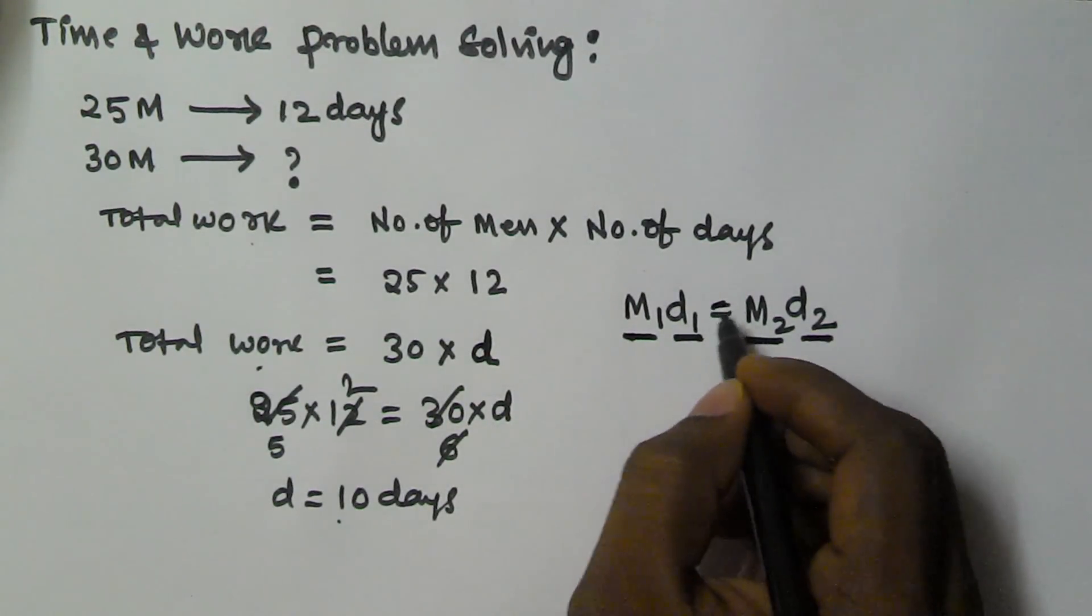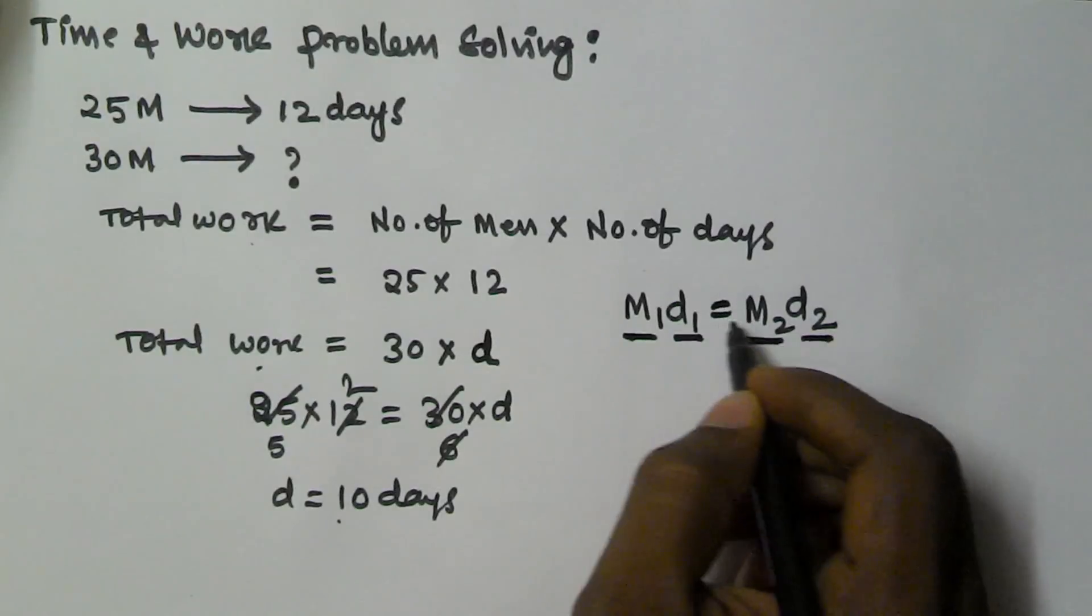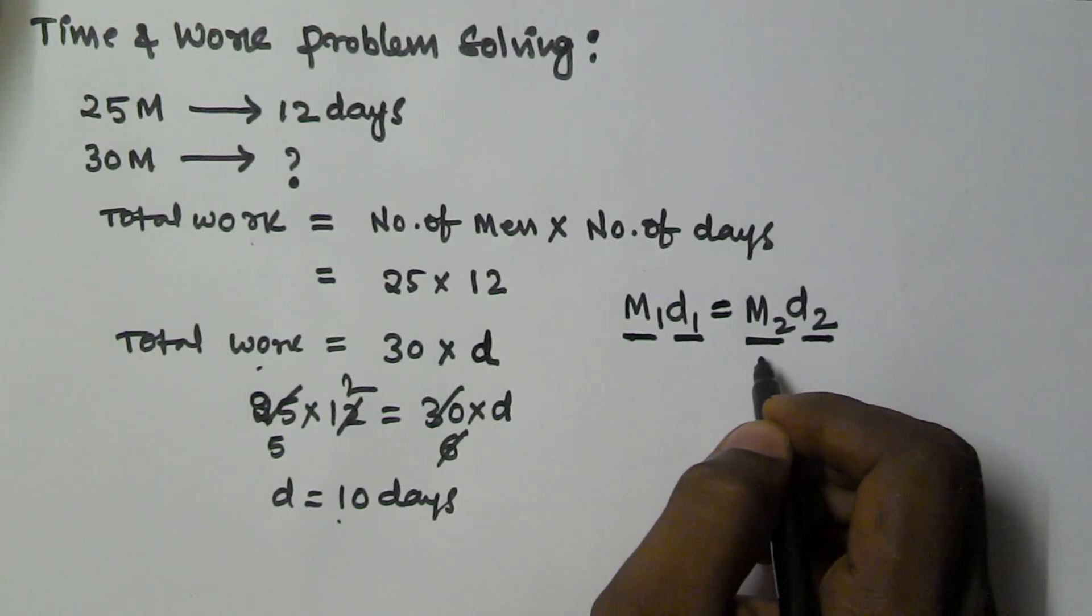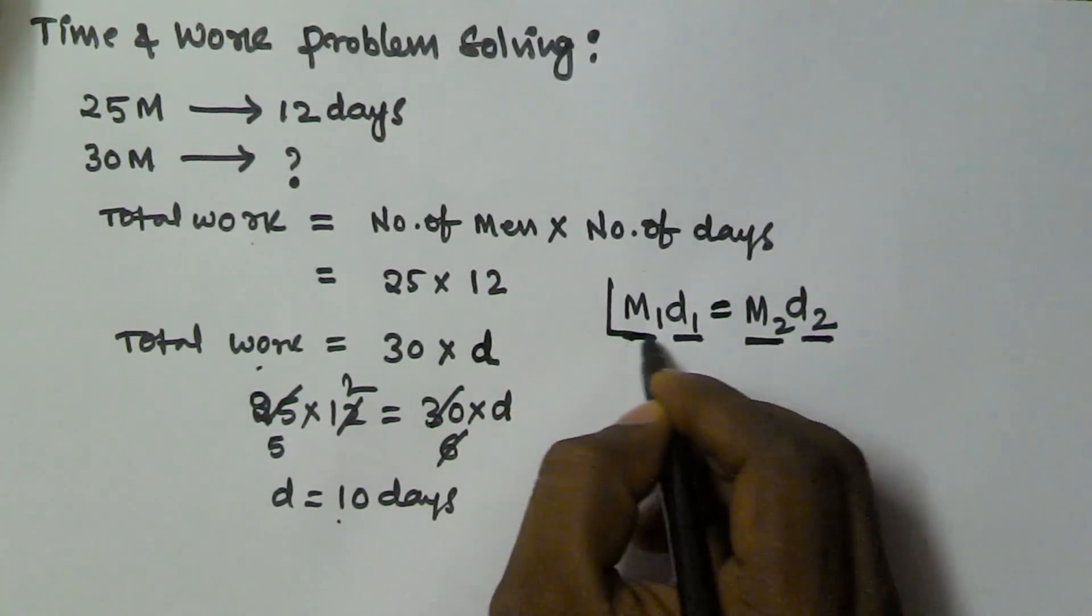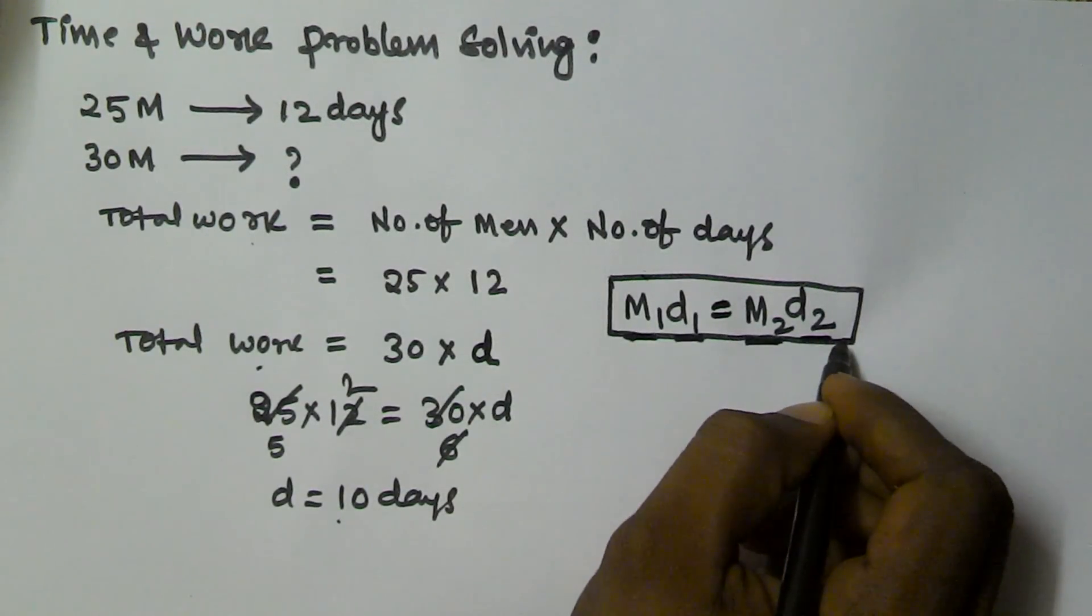This is constant and equivalent to the total work they finish. That's why M1D1 equals M2D2.